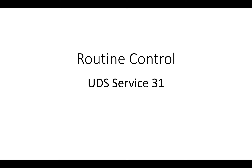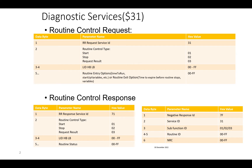Let's see the request and response format for UDS service 31 routine control. The request starts with service ID 31, followed by the sub-function. There are three sub-functions: 01 to start the routine, 02 to stop the routine, and 03 to request the result. This is followed by the routine identifier (RID), which is a unique two-byte value for each routine.